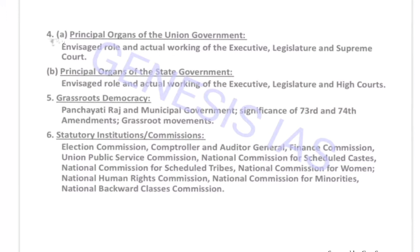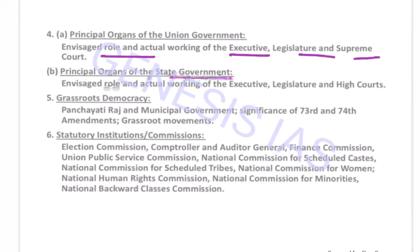The fourth topic is the Principal Organs of the Union Government. It includes the formal role and actual working of the executive, legislature, and Supreme Court. The same applies to state governments — the formal role and actual working of the executive, legislature, and High Courts.